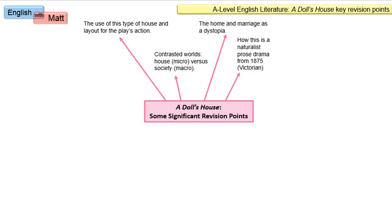We know about the Victorian era — it was very respectable. Respectability was important, seriousness was important, and one of the ways you got that was through how society perceived you as a citizen. We'll talk a bit more about that in terms of Helmer.